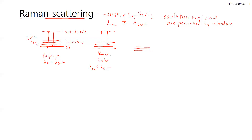Less frequently, you can also have electrons start in an excited vibrational state, be excited into this virtual state, and then relax back down to the ground state. This is also Raman scattering, but it's called anti-Stokes. The wavelength of your scattered light is going to be shorter than your incident, so it's higher energy. This occurs less frequently than Stokes scattering because the population of electrons in an excited vibrational state is smaller than in the ground vibrational state.